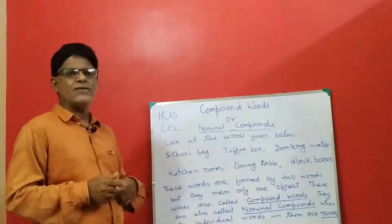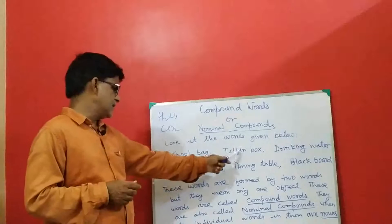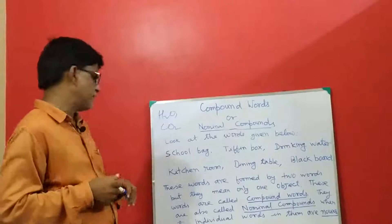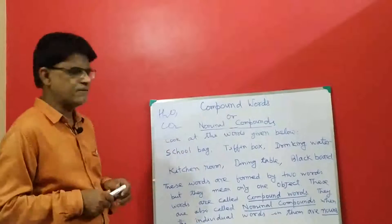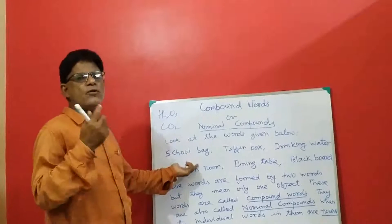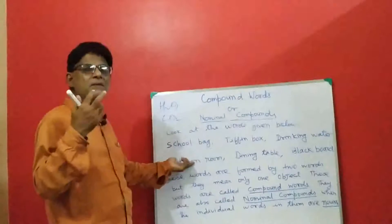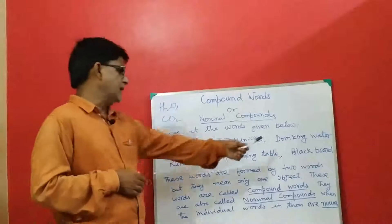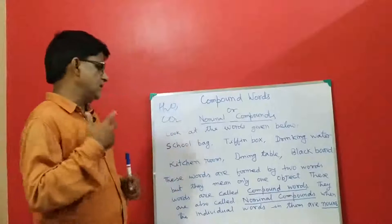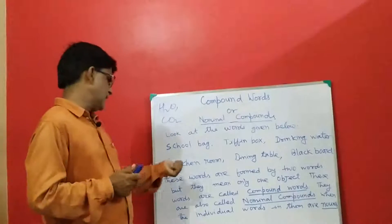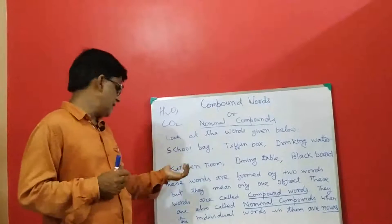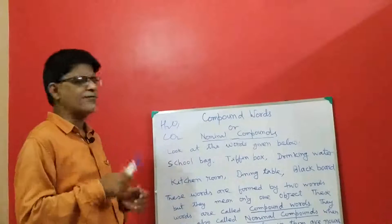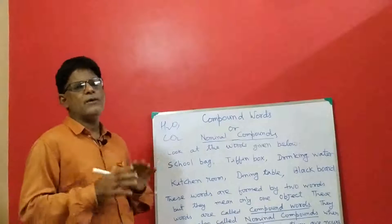Look at the words given below: school bag, tiffin box, drinking water, kitchen room, dining table, and blackboard. All these words are compound words. School bag is composed of two words: school and bag. Tiffin box is made up of tiffin and box. Drinking water is made up of drinking and water. Kitchen room is made up of kitchen and room. Dining table is composed of dining and table. And blackboard is made up of black and board.